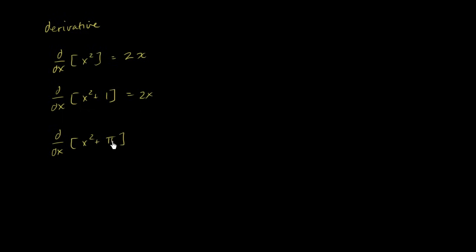The derivative of x squared is 2x. The derivative with respect to x of pi or of a constant is 0. The derivative with respect to x of 1 is just a constant, it's just 0. Once again, this is going to be equal to 2x. In general, the derivative with respect to x of x squared plus any constant is going to be equal to 2x.